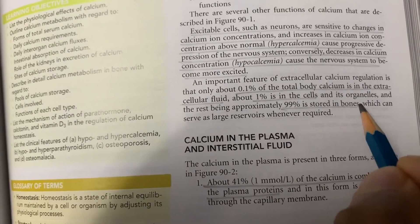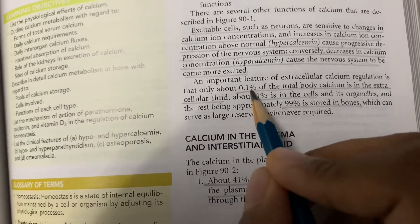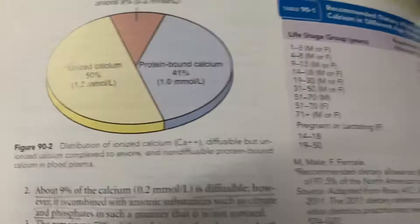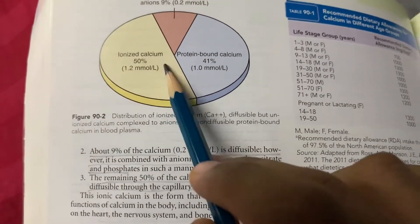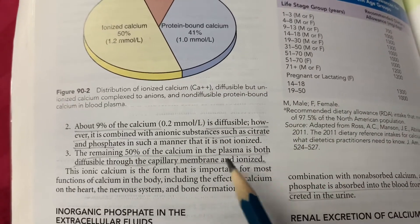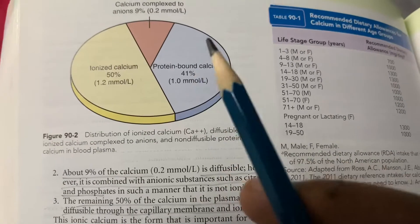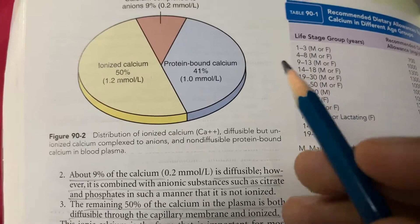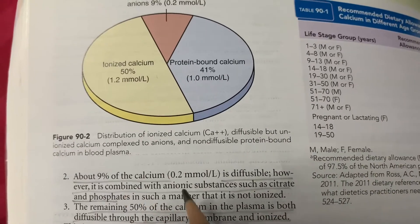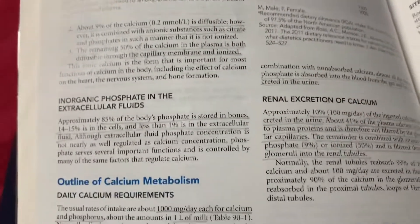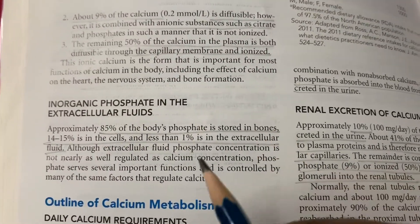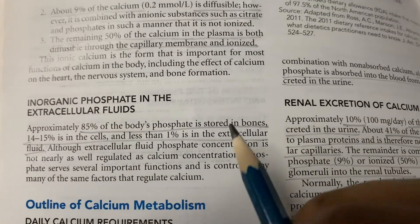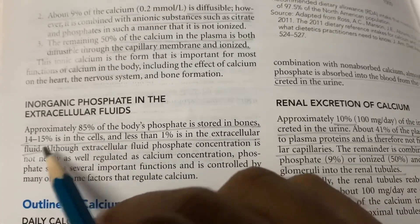99% of body calcium is stored in bones, only 1% in cells, and 0.1% in extracellular fluid. Looking at the plasma fractions: 50% of calcium is active, present in ionized form and diffusible through the capillary membrane. Of the remaining 50%, 41% is bound to plasma proteins such as albumin and is not diffusible, and 9% is complexed with anions such as citrate and phosphate and is not ionizable. For phosphate, 85% is stored in bones and less than 1% is in extracellular fluid.